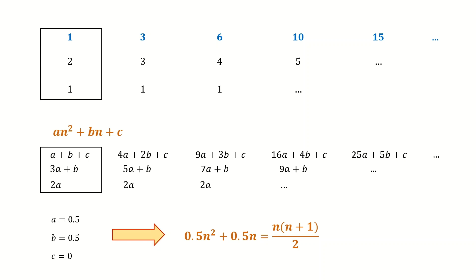As you can see, this formula generates the original sequence. If you plug n equal to 1, you get 1 times 2 divided by 2, or 1. For n equal to 2, you get 2 times 3 divided by 2, or 3. For n equal to 3, you get 6, and so on. And you've found the formula that generates the sequence.